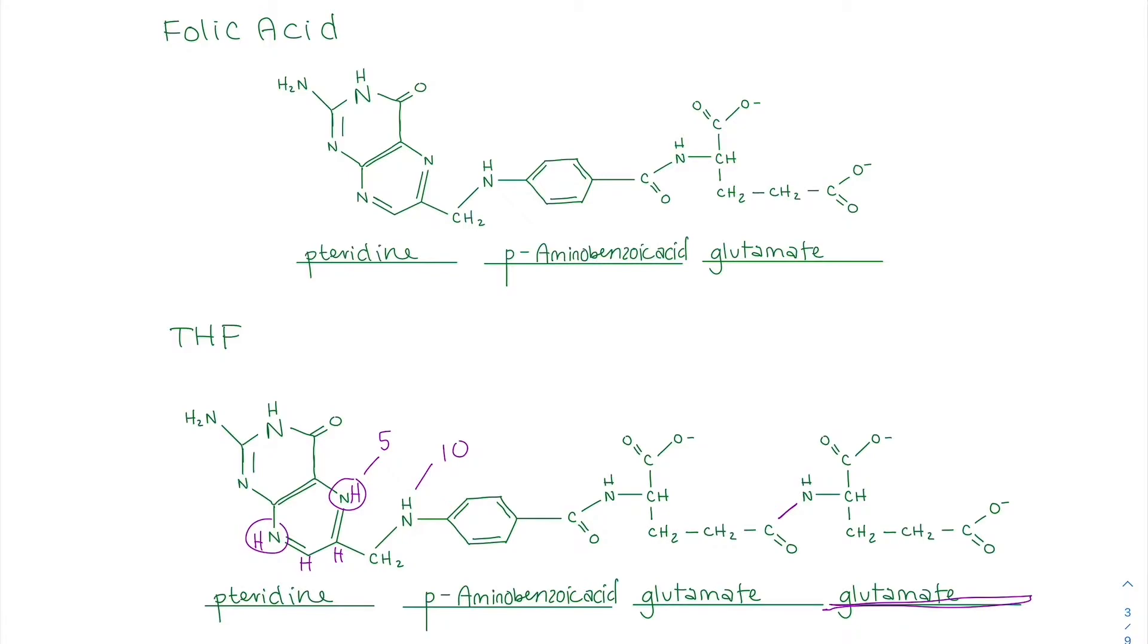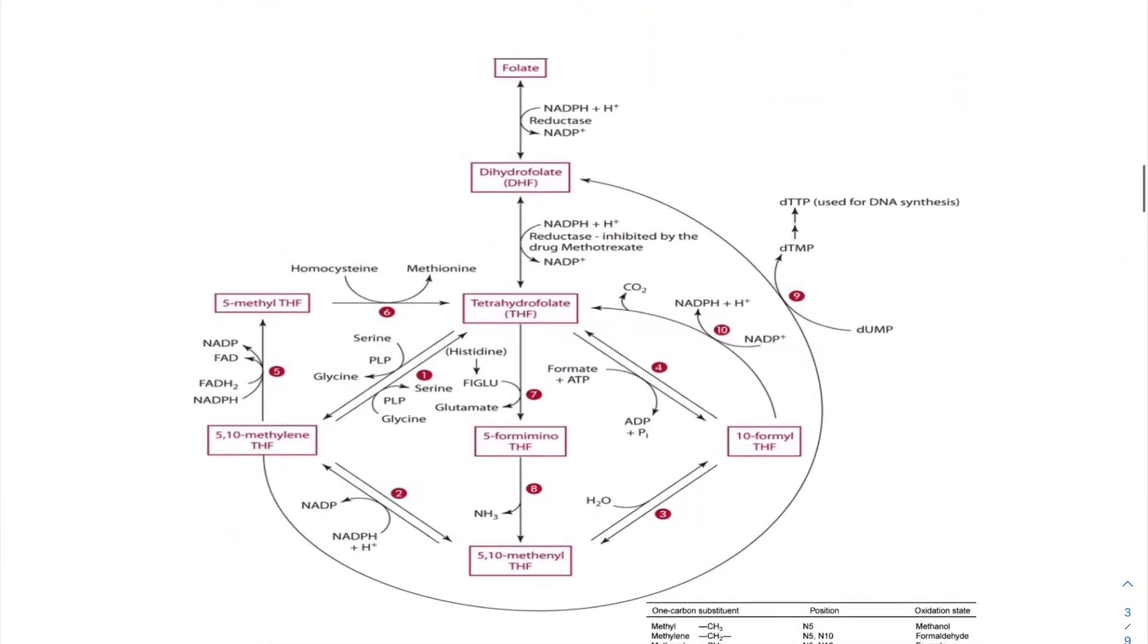These are the carbon units that I'm talking about. Things like methyl and formyl add on to the five and the ten position. Simply enough, those are the three steps of how to convert folic acid to THF. And we will talk about that in this.